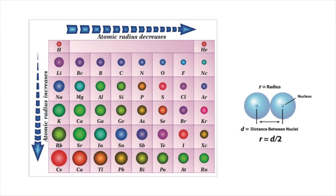Atomic radii increase down a group and decrease across a period. Atomic radii increase down all groups because there are more filled shells, more shielding and less pull from the nucleus. Across a period, more protons are added to the nucleus without increasing shielding, so outer electrons are more tightly held and atomic radii decreases.